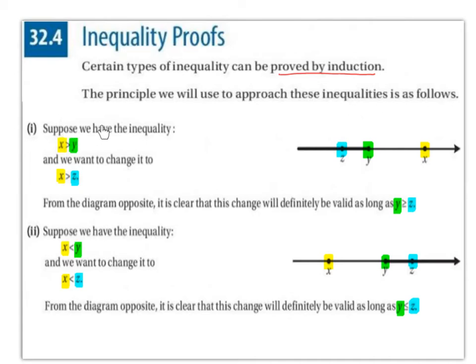Suppose we have the inequality x is greater than y. So here's our number line, and x is some value that is greater than y, so it's to the right of y.